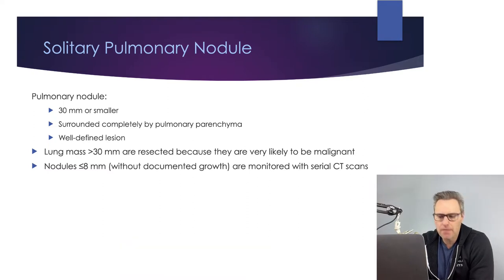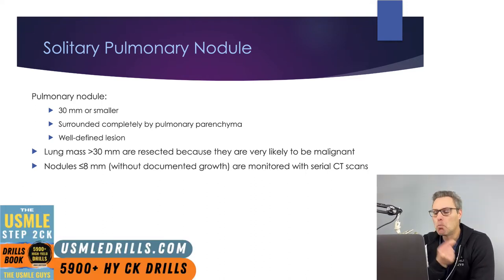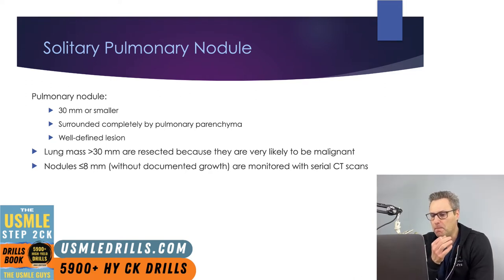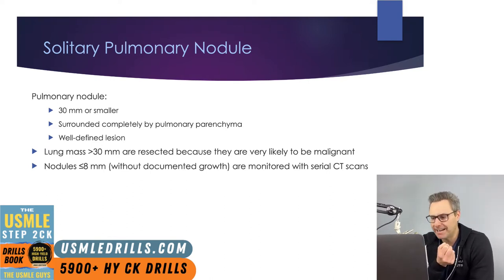When you get above a size of 30 millimeters, we call this a lung mass, not a lung nodule. Masses of this size are statistically more likely to be malignant. There are a huge number of causes for pulmonary nodules, from benign neoplasms to cancers to infections and more. But in terms of management, size is extremely important.